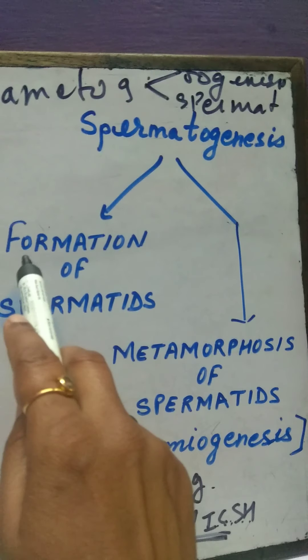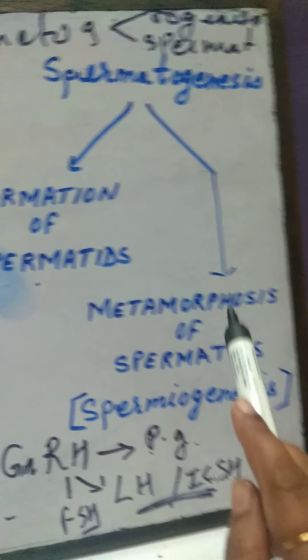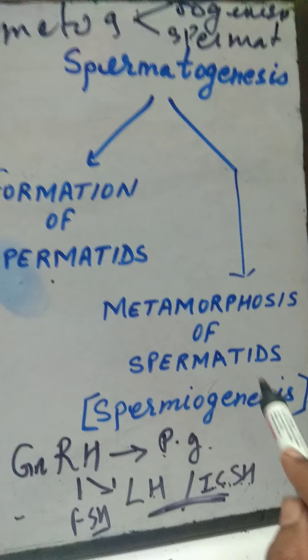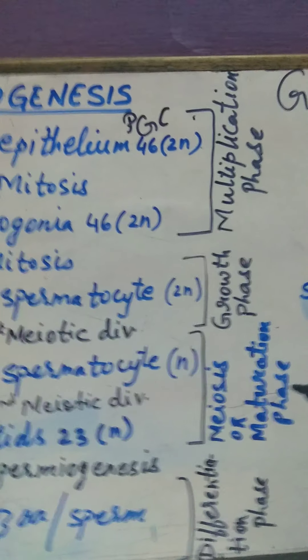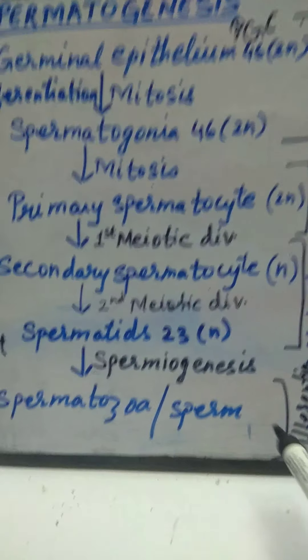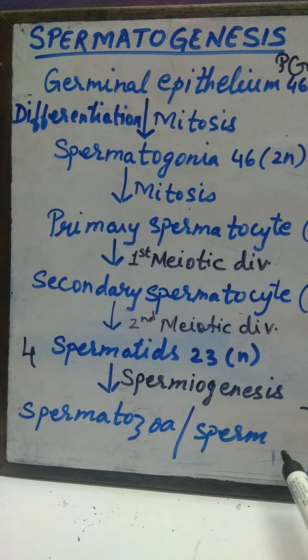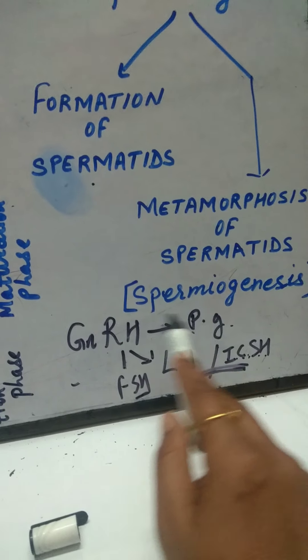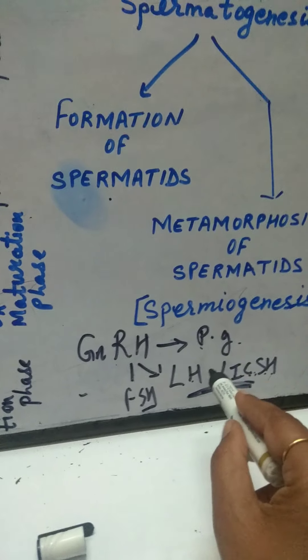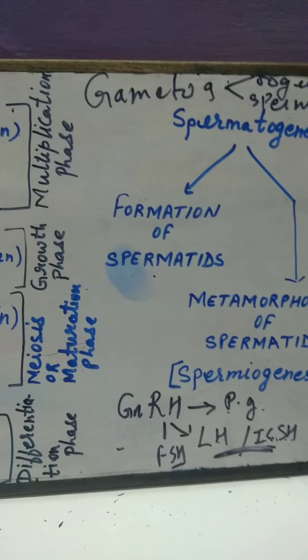To summarize, spermatogenesis involves two steps: first, formation of spermatids through multiplication phase, growth phase, and maturation phase; and second, spermiogenesis — the formation of spermatozoa from spermatids. If anyone has any doubt, you can contact and note down the points covered in this topic.